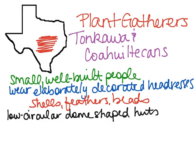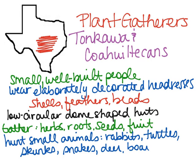They live in low circular dome-shaped huts that can be taken apart and packed on their back so they can move quickly to where the food sources are. As for food, they gather herbs, roots, seeds, and fruit. They hunt only small animals like rabbits, turtles, skunks, snakes, deer, and boar, which is wild pig.